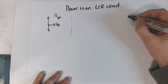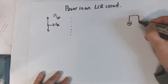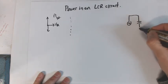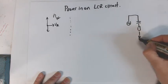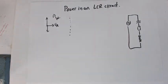Remember this is a circuit like this where we've got an AC power source, we've got a capacitor, we've got a resistor, and we've got a coil. So we've got all three there.